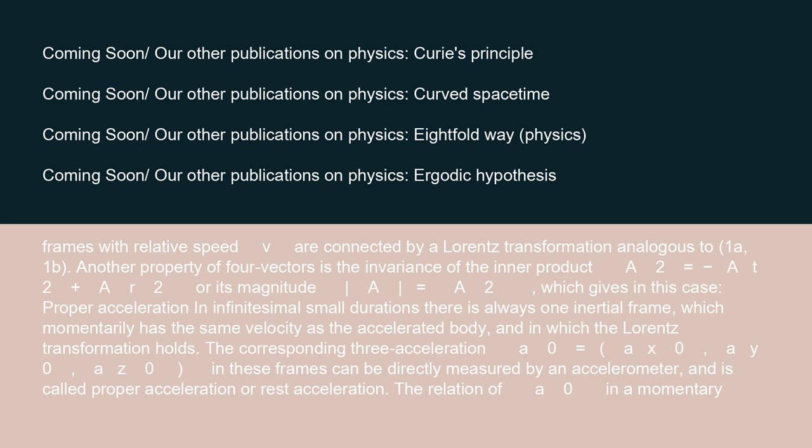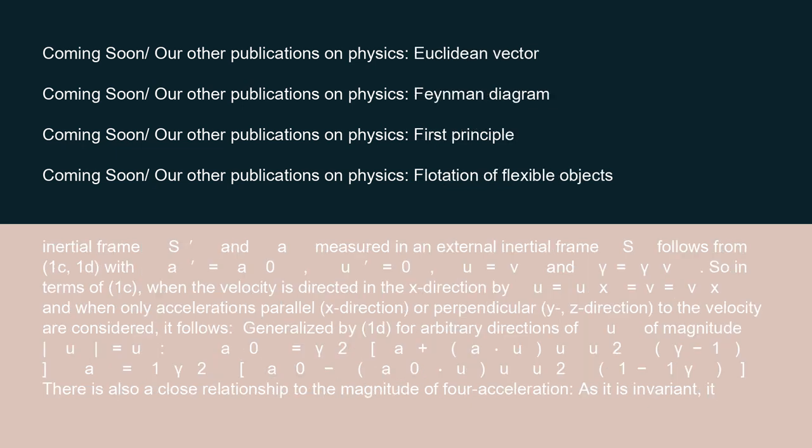Proper acceleration: in infinitesimally small durations, there is always one inertial frame which momentarily has the same velocity as the accelerated body, and in which the Lorentz transformation holds. The corresponding three-acceleration A₀ equals (AX₀, AY₀, AZ₀) in these frames can be directly measured by an accelerometer, and is called proper acceleration or rest acceleration. The relation of A₀ in a momentary inertial frame S′ and A measured in an external inertial frame S follows from the transformation, with A equals A₀, U equals 0, U′ equals V, and gamma equals gamma_V.